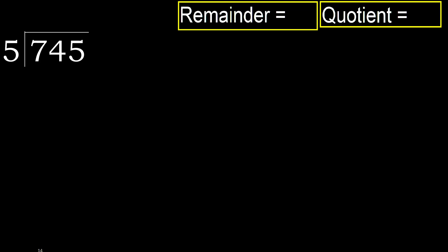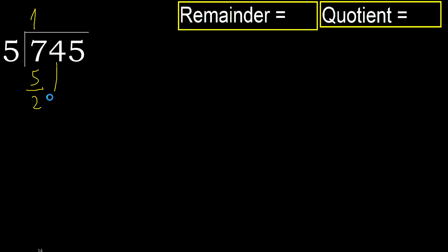745 divided by 5. 7 is not less, therefore with 7: 5 multiplied by which number is nearest to 7 but not greater? 5 multiplied by 2 is 10 — 10 is greater. Multiplied by 1 is 5, which is not greater. Ok, subtract. Next.